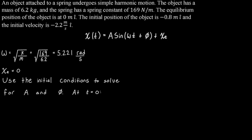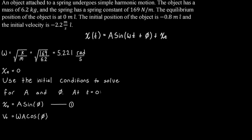We start by taking our position equation and plugging in t equals zero. When t equals zero, we get that x₀, the initial position, equals the amplitude times sine of the phase shift. We can do the same thing for the velocity: the initial velocity equals omega times A times cosine of the phase shift. Bringing omega over to the left-hand side, I'll call these equations 1 and 2.